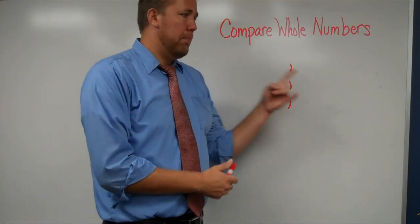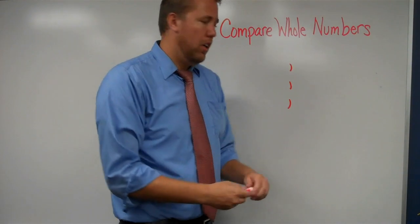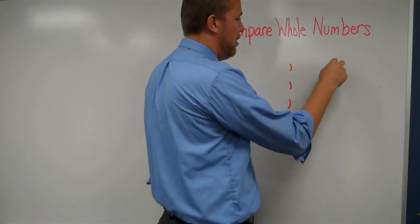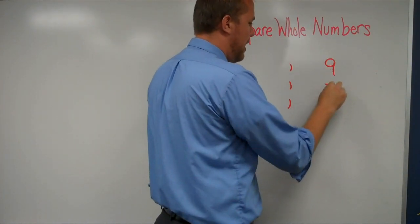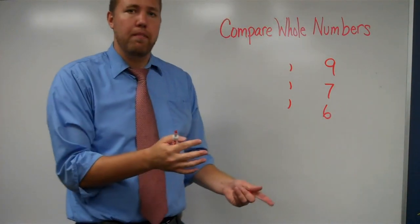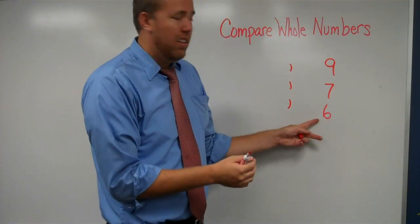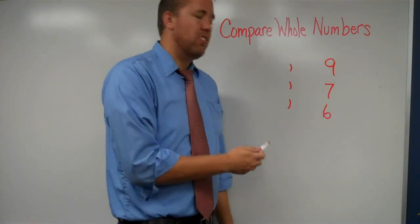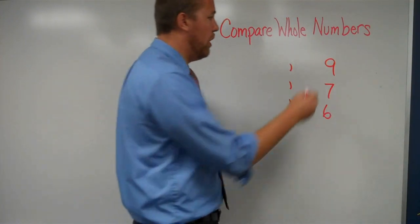So we'll line up the numbers by the ones column. That means that every single one, whether it's a nine, a seven, or a number ending in a six, if we line them up according to the ones place, then everything else will line up as well.